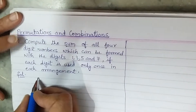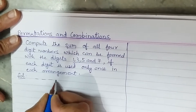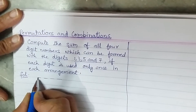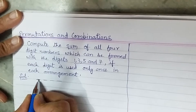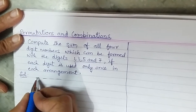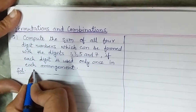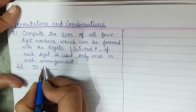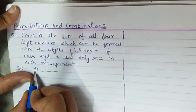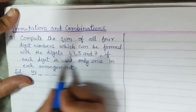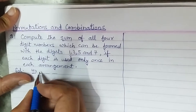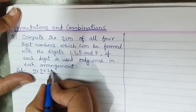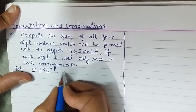To make a four-digit number, we have four places: units place, tens place, hundreds place, and thousands place. For the thousands place we have four choices — 1, 3, 5, and 7. For the hundreds place we are left with only three choices because one digit is already used. For the tens place we are left with only two choices, and for the units place only one choice.